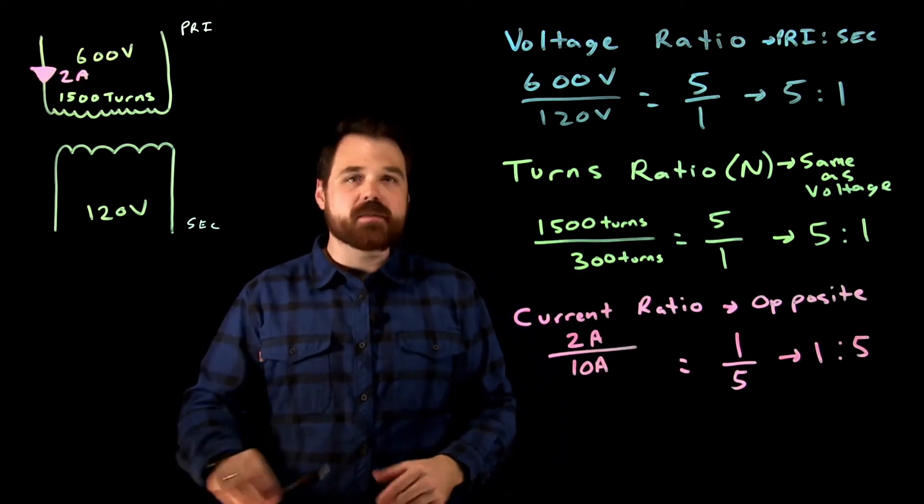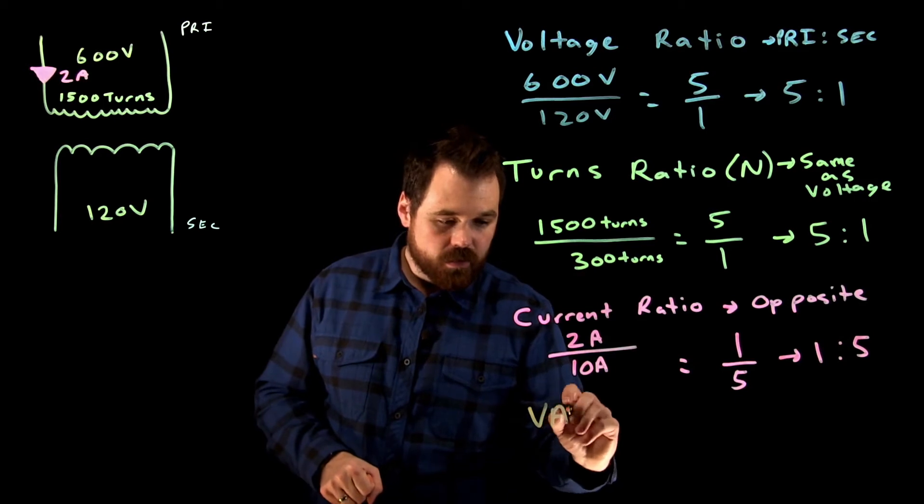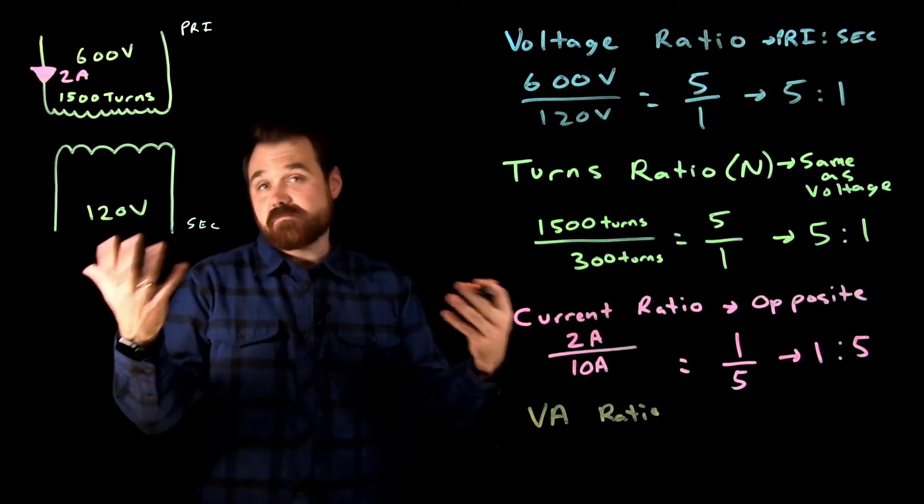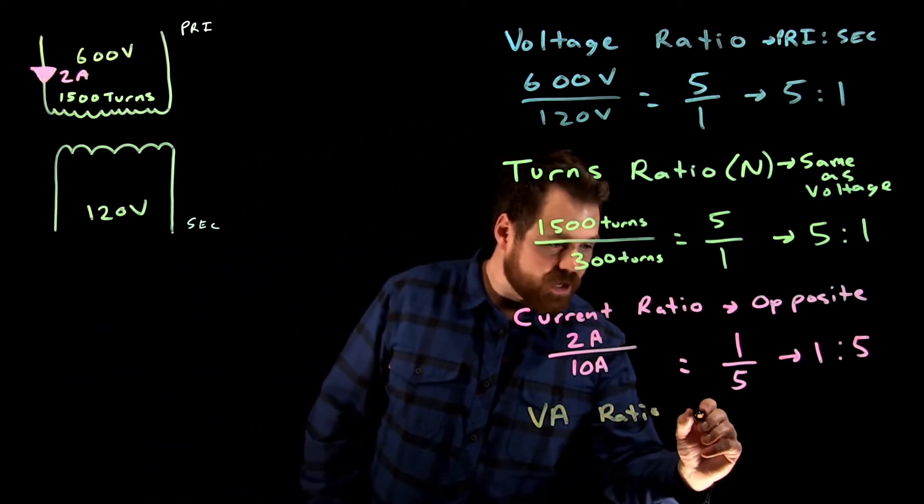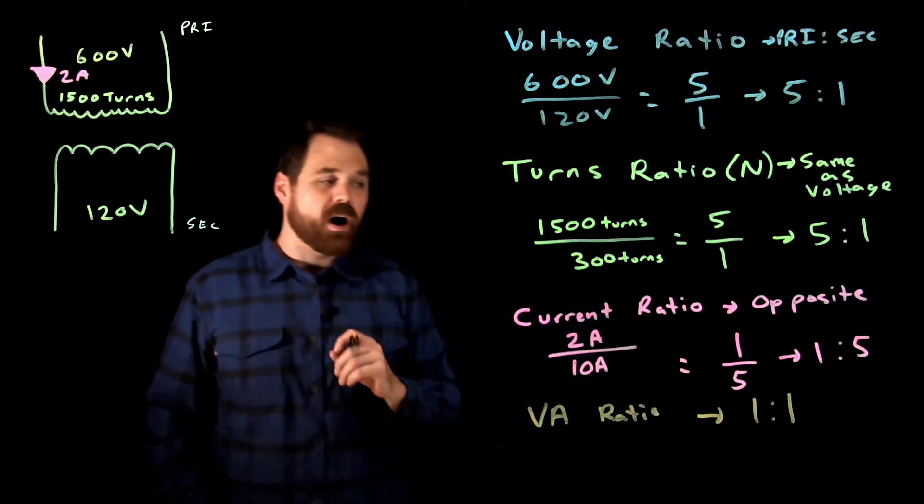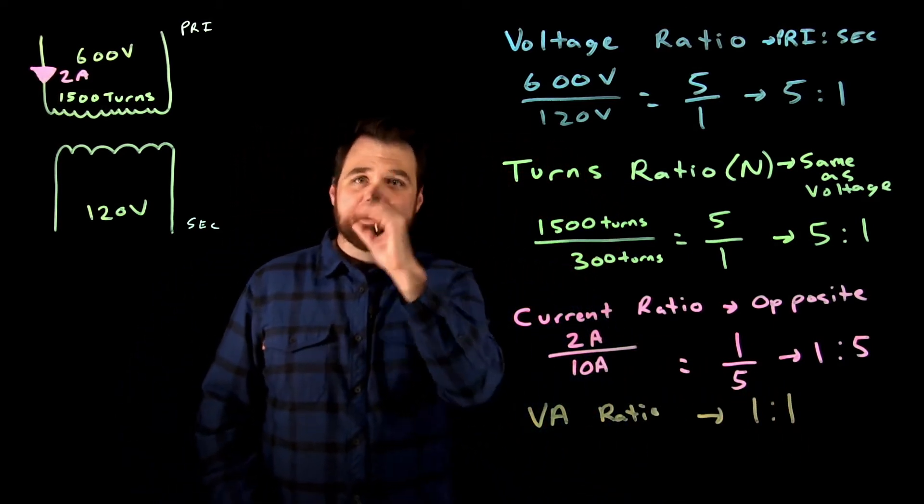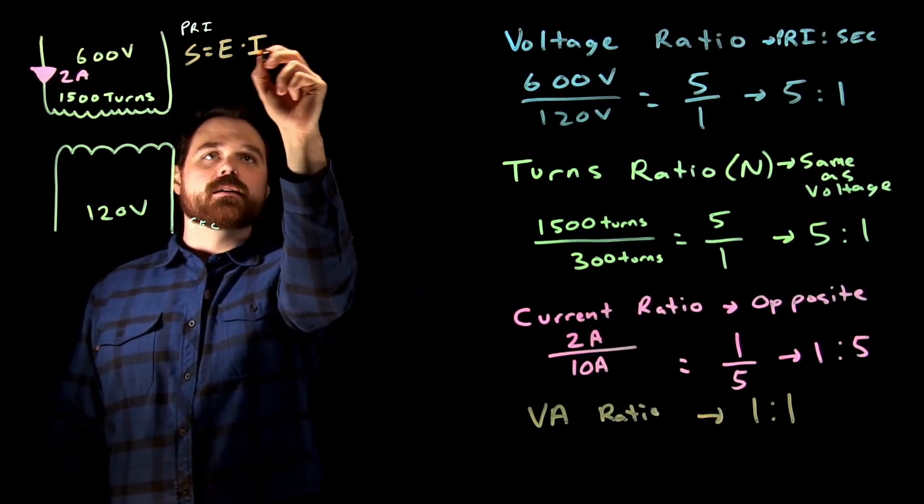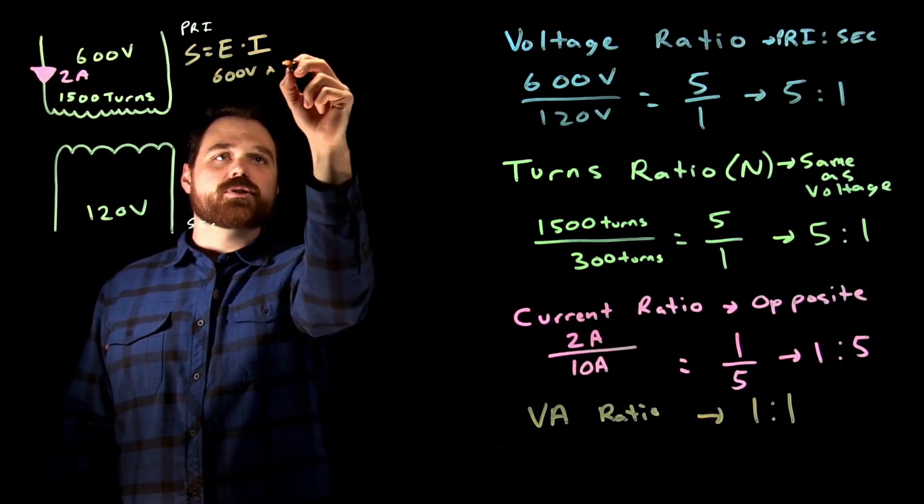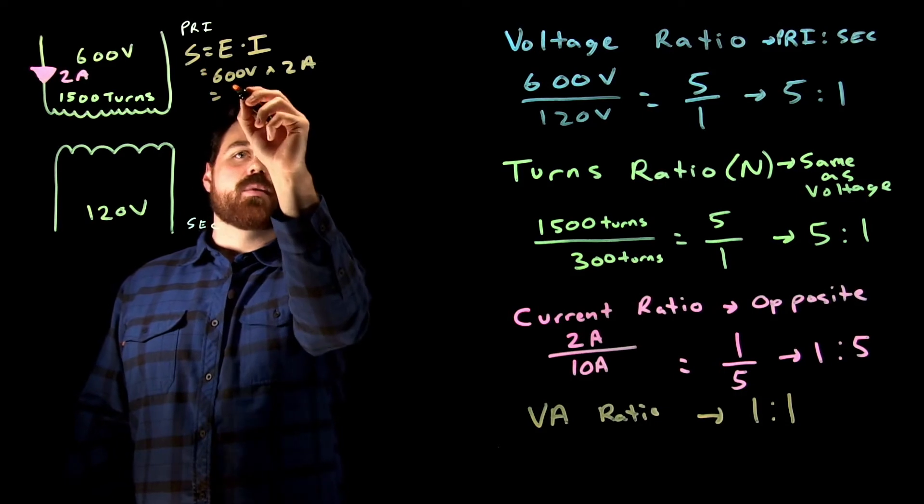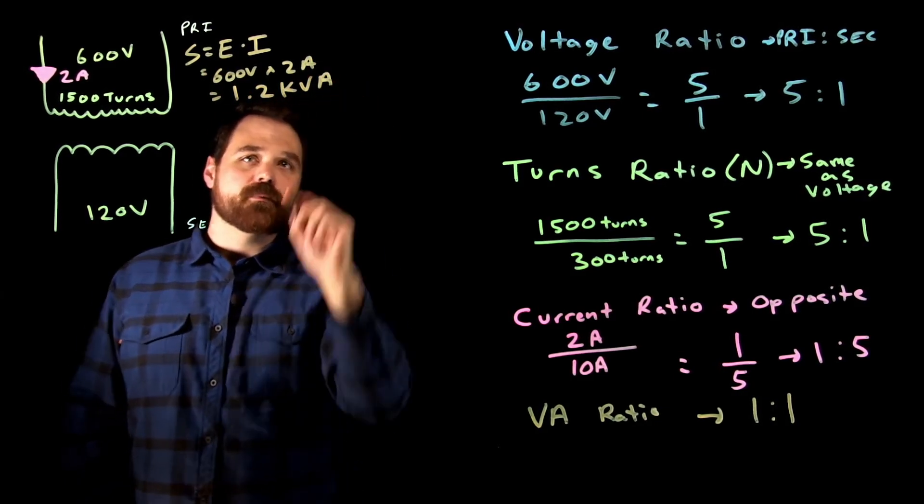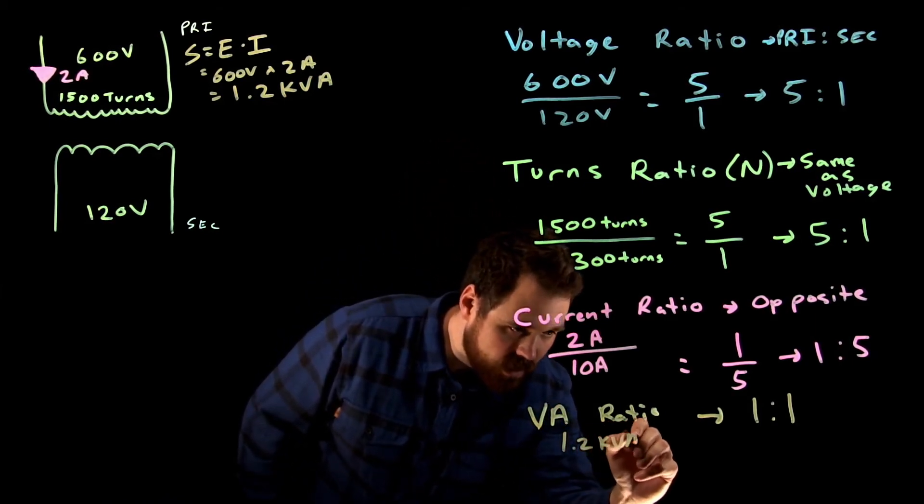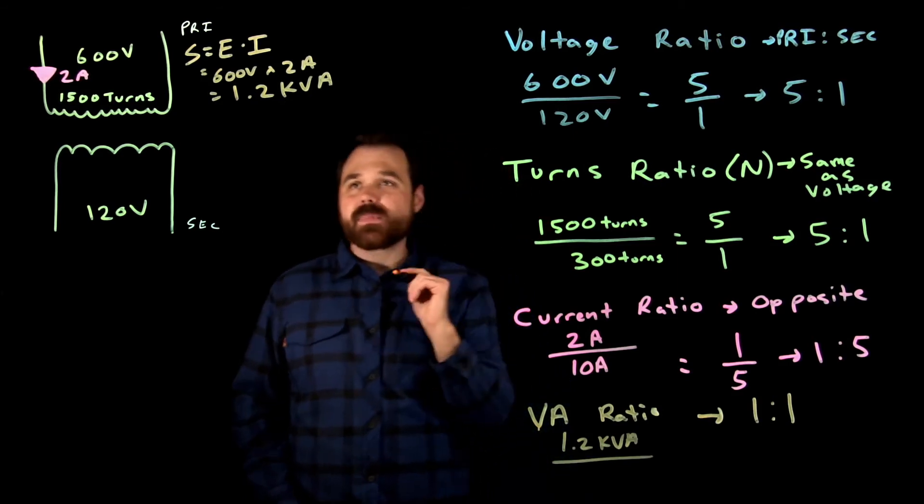Now the very last ratio I want to talk about is the VA ratio. Now the VA ratio in a perfect transformer, in ideal, in theory, in an ideal world is always going to be a one to one ratio. So let's talk about that. So let's talk about the primary first. So primary, S equals E times I. So we had 600 volts times two amps. That gives us 1.2 kVA, 1200 volt amps or 1.2 kVA. That's the primary.